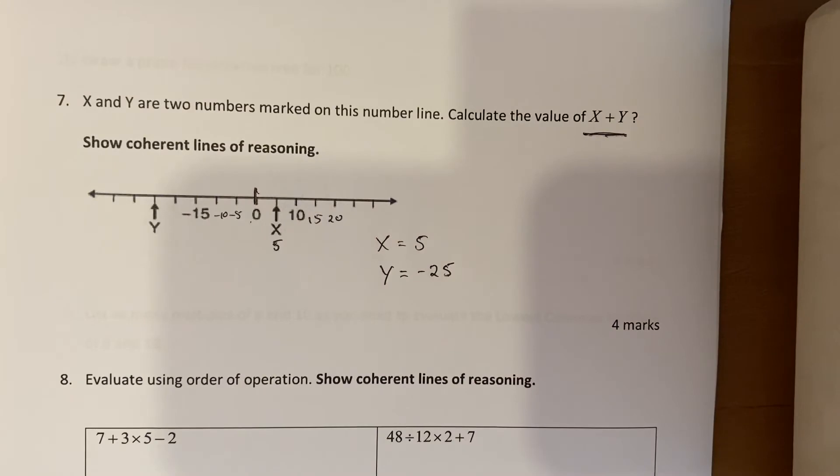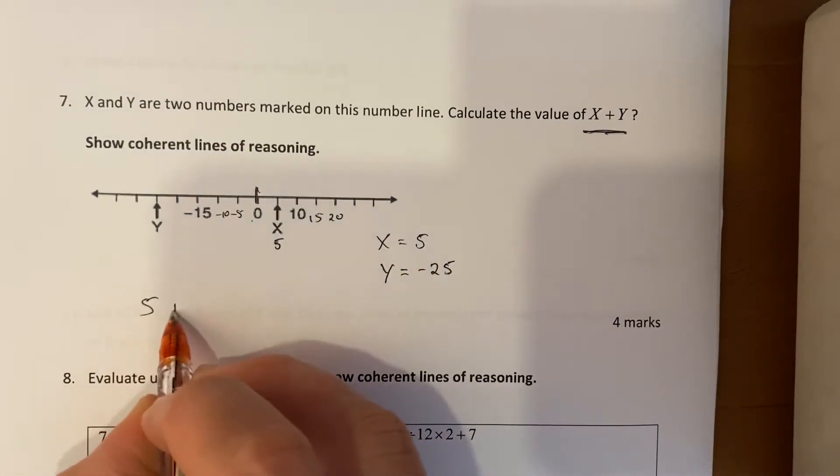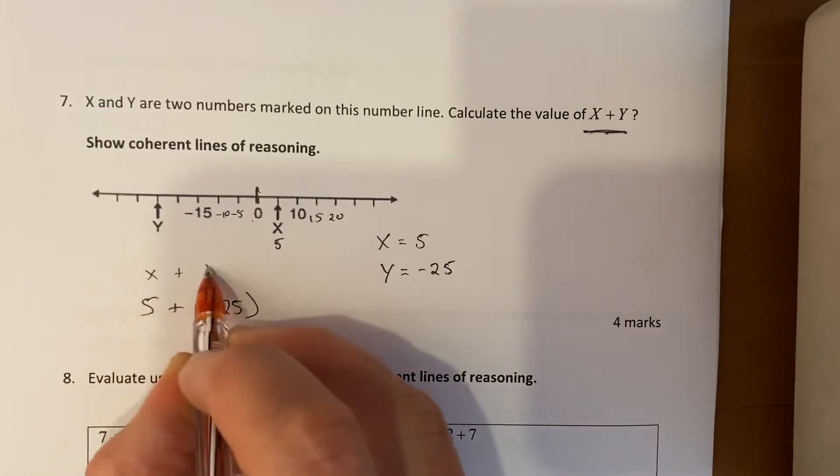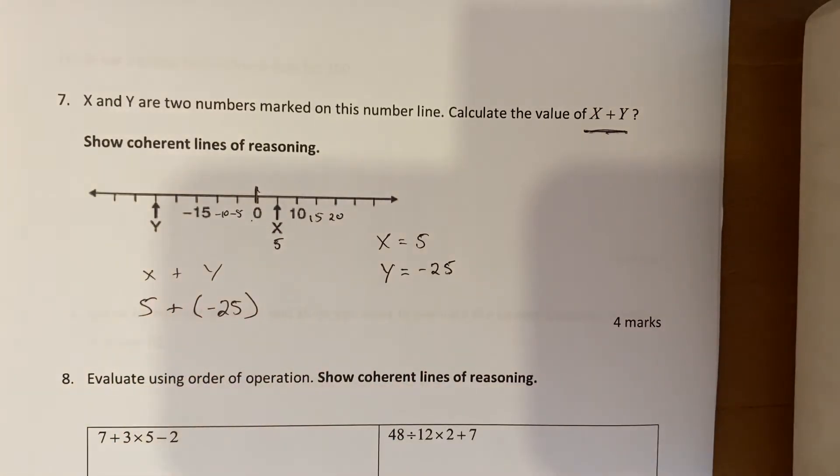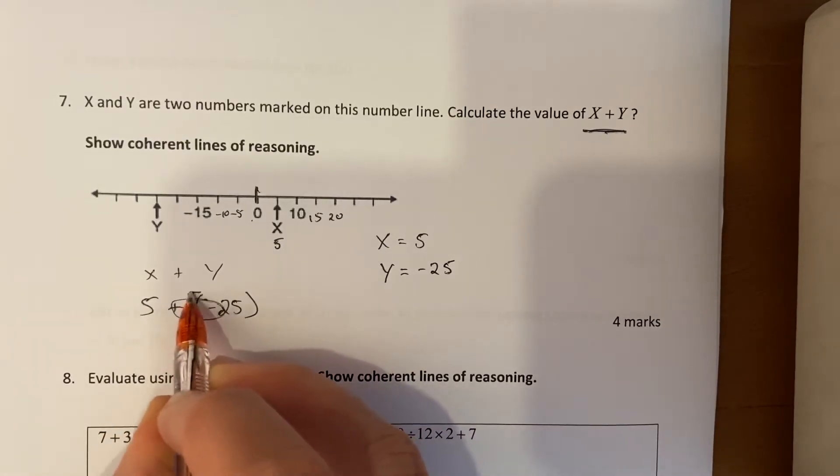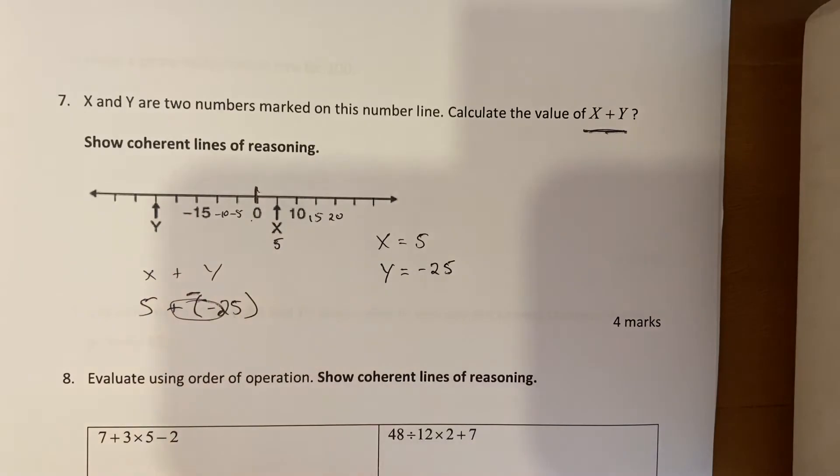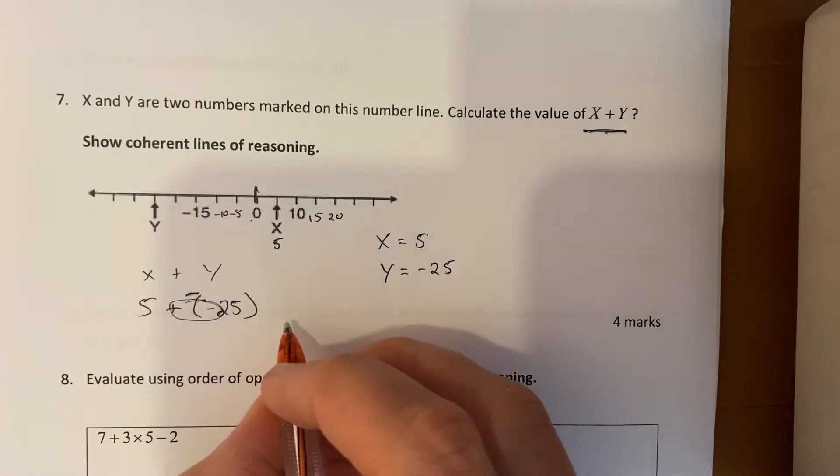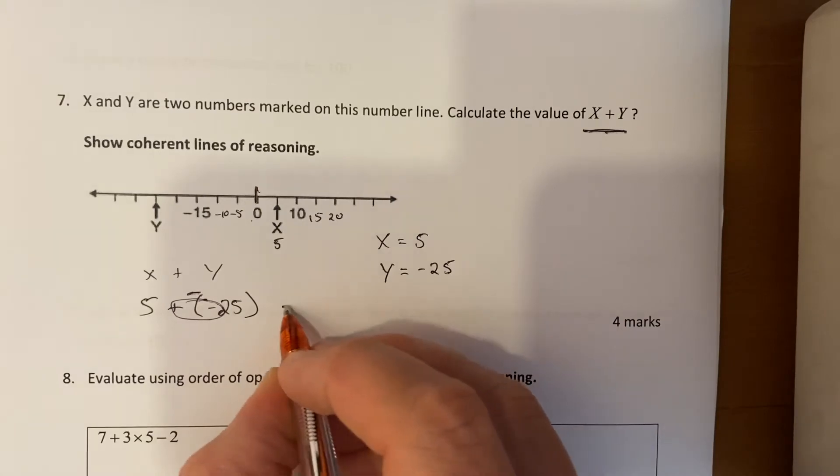I want to calculate the value of x plus y, so in other words 5 plus minus 25. So that's x plus y because y is minus 25. Now it's like one of those questions in question 5 - plus and minus together is a minus, so it's actually 5 minus 25. So you can start at 5, take away 25, and you end up at negative 20.